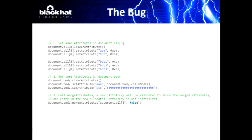This is the simplified POC of our bug. We have two elements here: the first is a div element in the document and the second is the body element. First we set some attributes to these two elements, then we call the function mergeAttributes on them. The function mergeAttributes will merge all the attributes of these two elements into a newly created CAttribute array, and the body element will contain this new CAttribute array after the call. The bug exists in the implementation of mergeAttributes.